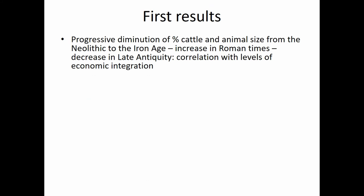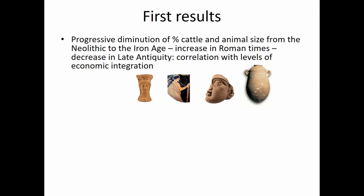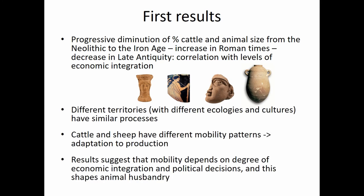So what can we see from all this? First, we have a progressive diminution in the frequency of cattle and animal size in this time period, with an increase in Roman times and a decrease in Late Antiquity — so there is a correlation with the level of economic integration. It also seems that only in the Iron Age, despite there being a lot of trade in the Mediterranean, only certain products are circulating, not livestock. Another finding is that different territories, different ecologies and cultures, have similar processes. Cattle and sheep have different mobility patterns, adapted to their production role. And the results suggest that mobility depends on the degree of economic integration and political decisions, and this is shaping animal husbandry.